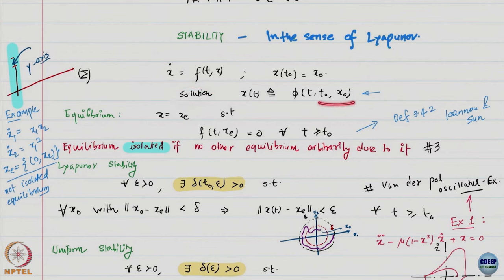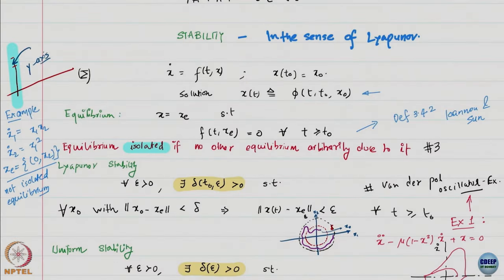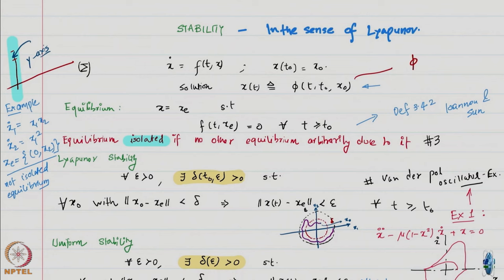Once I plug in the initial condition, there is a solution, usually denoted by a different symbol. Mathematically precise textbooks like Vidyasagar for nonlinear systems use a different notation for the solution versus the state. If I write this as phi_t(x0) — just putting t as the subscript — this is called the flow of this dynamical system.